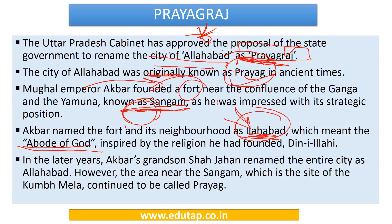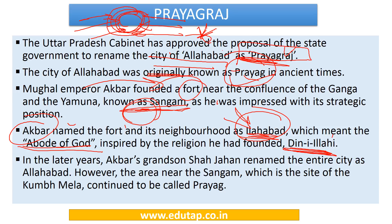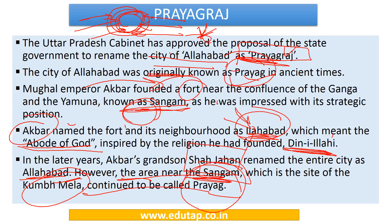The naming was inspired by Din-i-Ilahi — the religion founded by Akbar in which he took useful and positive points from every religion, creating a beautiful amalgamation. In later years, Akbar's grandson Shah Jahan renamed the entire city as Allahabad. However, the area where the Kumbh Mela is held — the Triveni place — continued to be called Prayag even then. Now the entire city has been renamed Prayagraj.